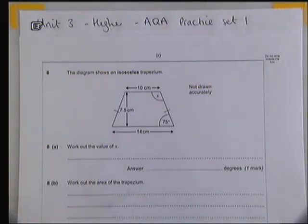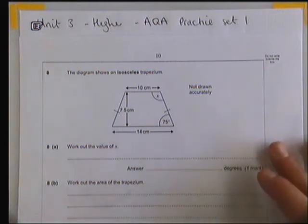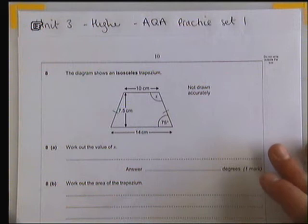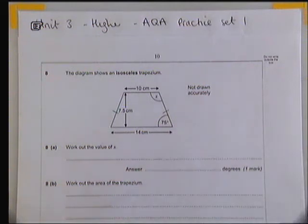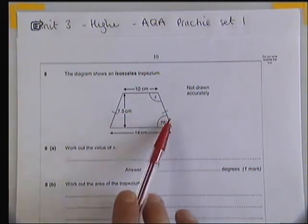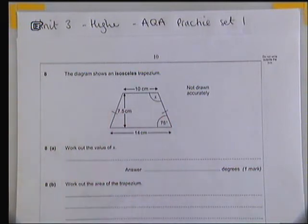Hello, and today I'm going to show you how to do AQA practice set 1 for the unit 3 higher specification, question number 8. This is from the practice set 1. We have a diagram showing an isosceles trapezium. An isosceles trapezium just means that these two sides here are the same length, and you can think of this as being a symmetrical trapezium.